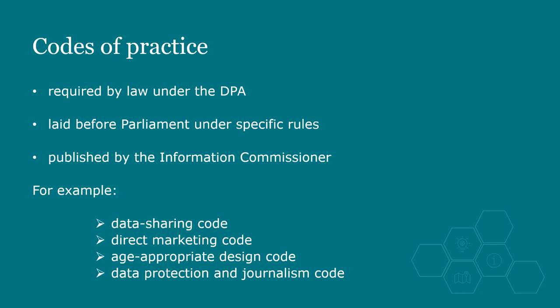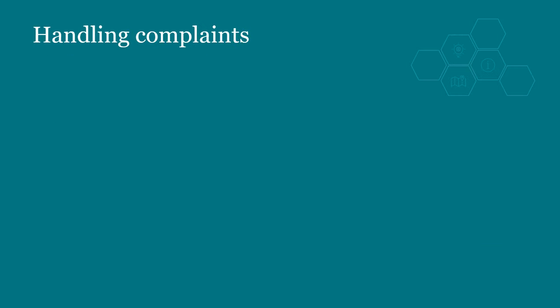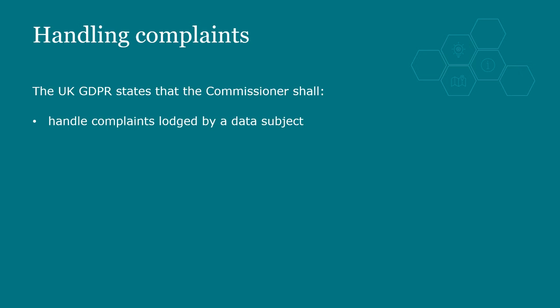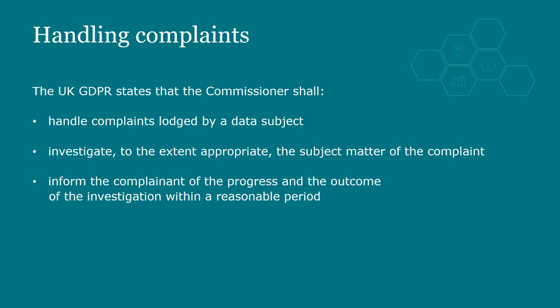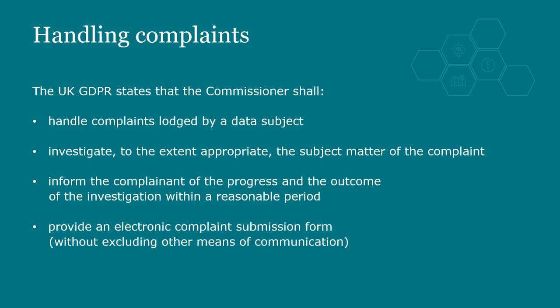These codes are all found in our guidance pages as they are published. Another key task is handling complaints from data subjects if they consider there has been an infringement of the UK GDPR in connection with the processing of their personal data. Section 165 of the DPA states that the Commissioner shall handle complaints lodged by a data subject, investigate the subject matter of the complaint, and inform the complainant of the progress and outcome within a reasonable period. Remember, a data subject can also complain to the ICO concerning infringements of Part 3 (Law Enforcement) and Part 4 (Intelligence Services Processing).